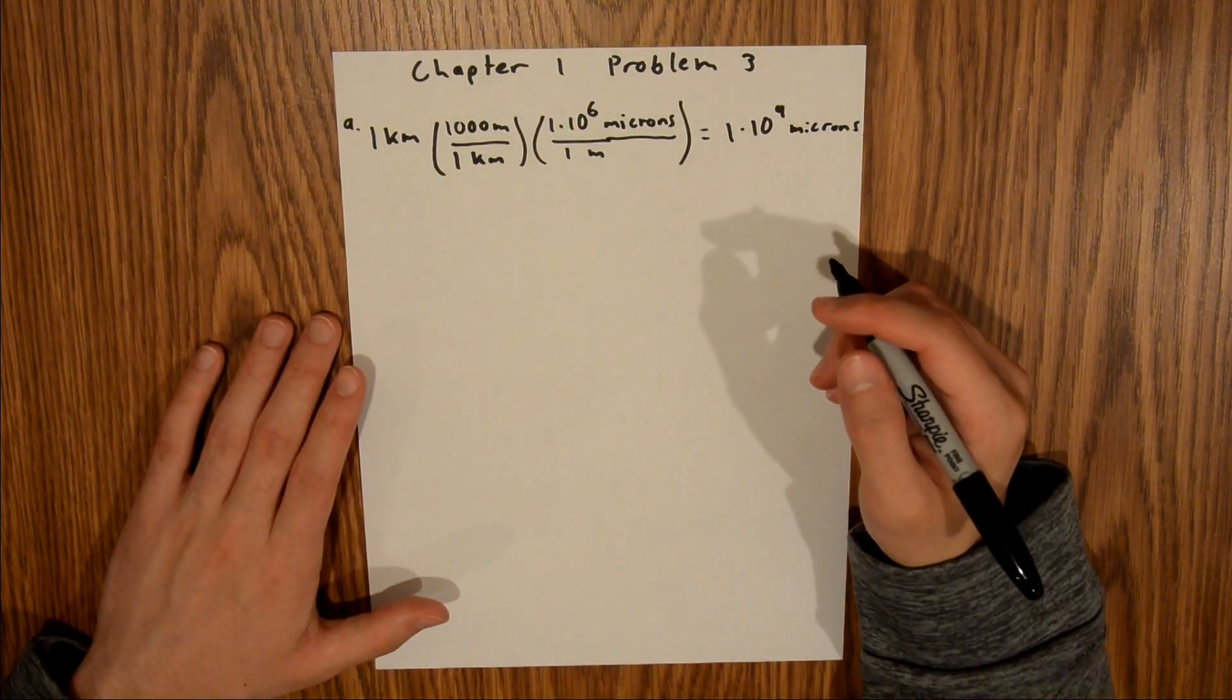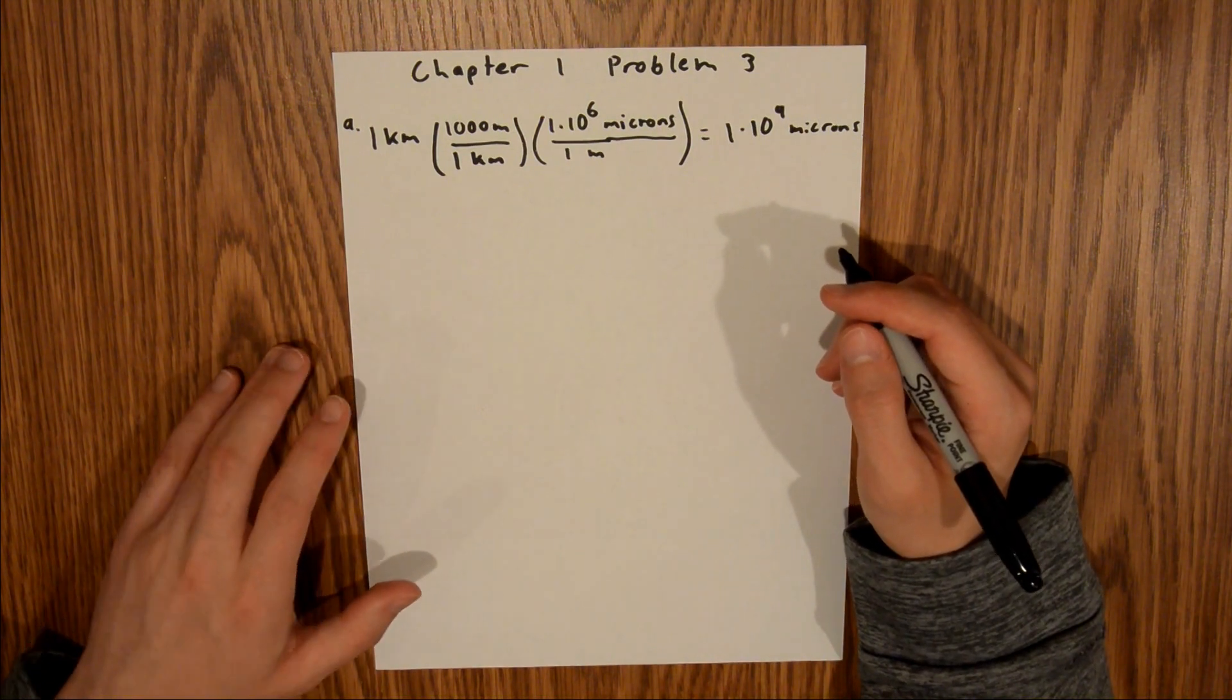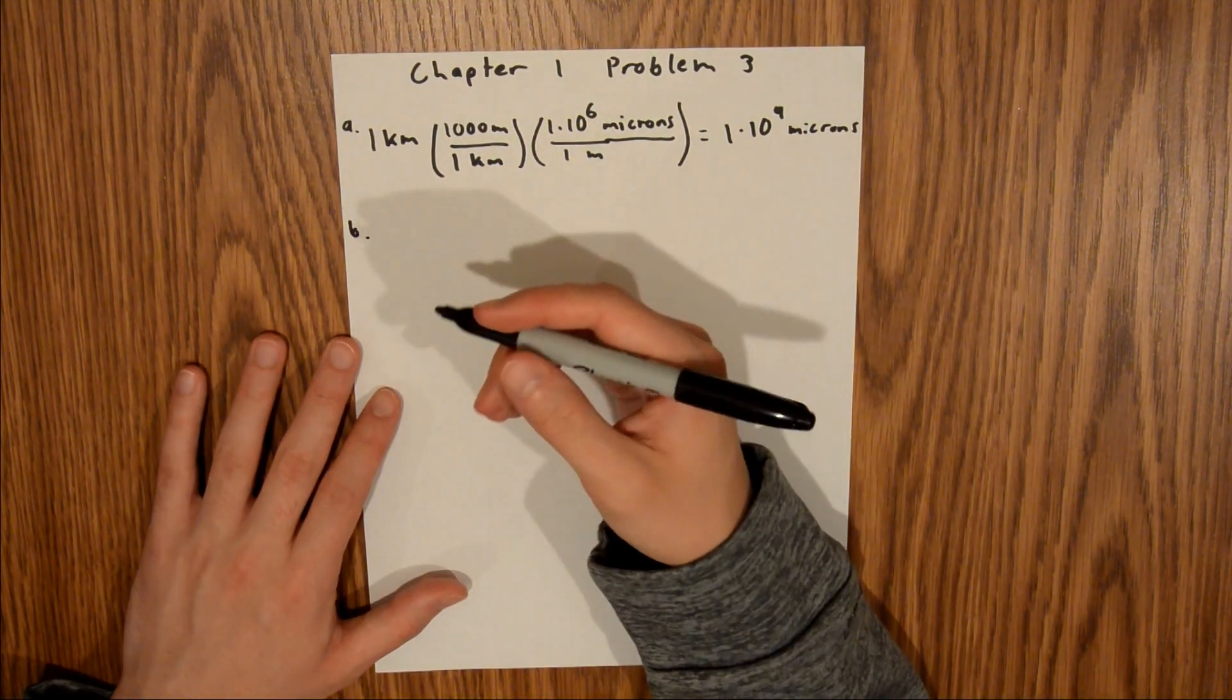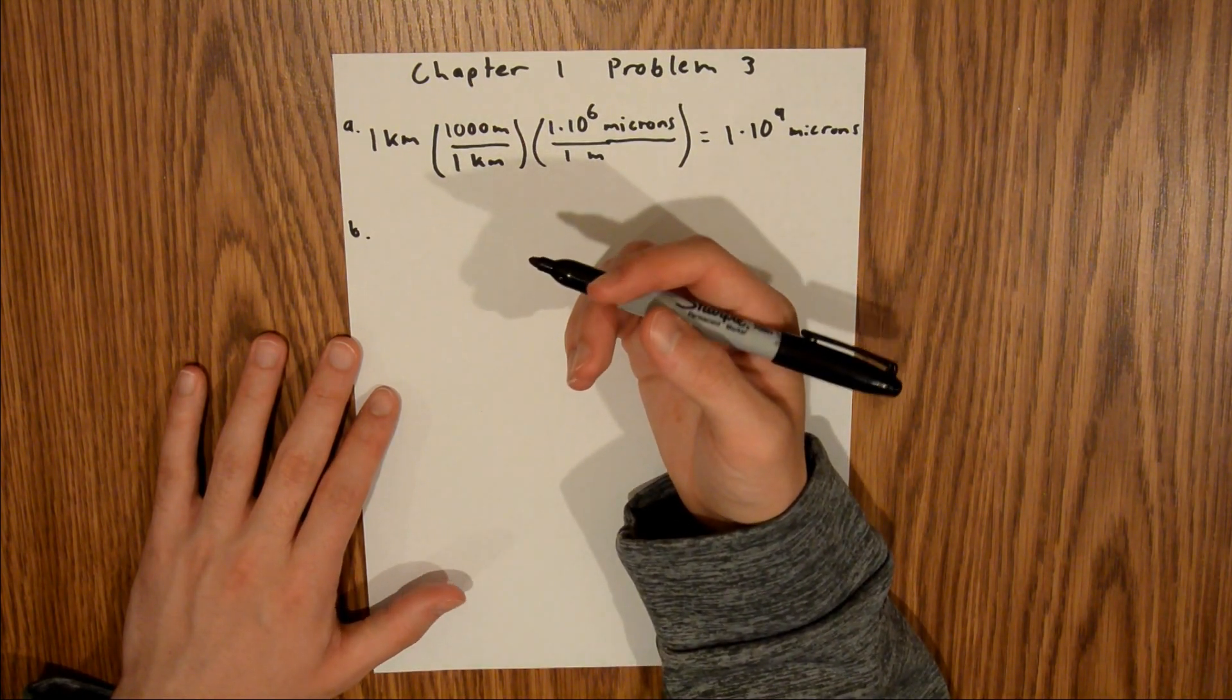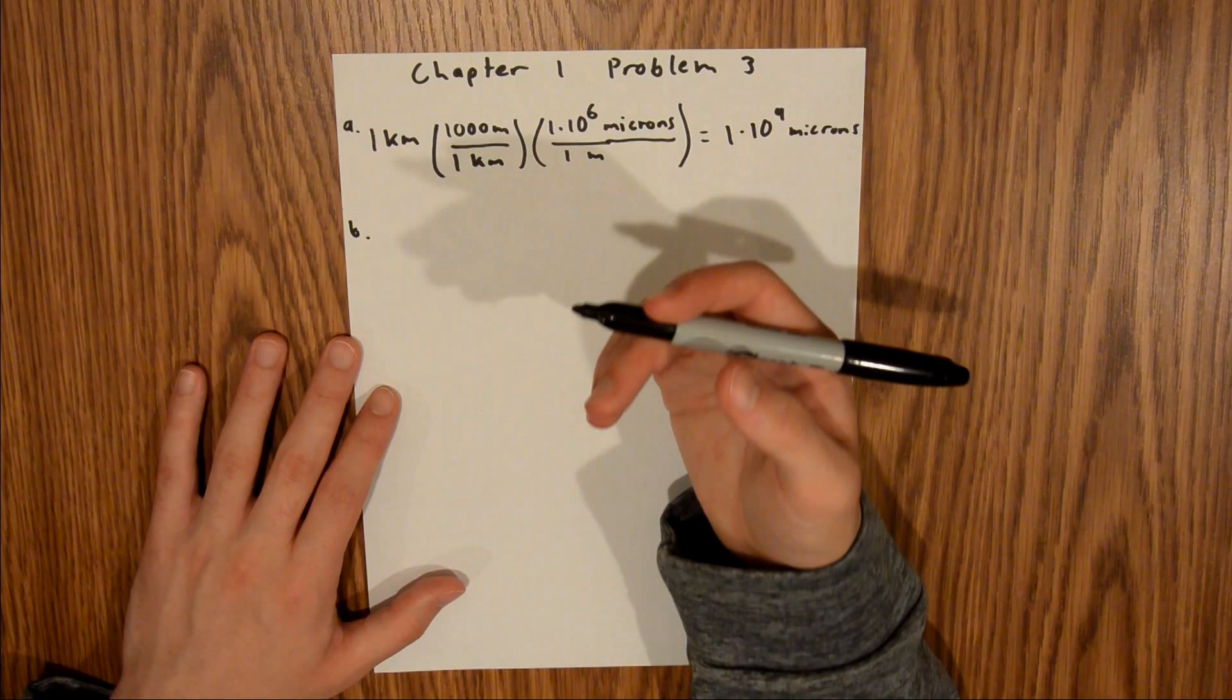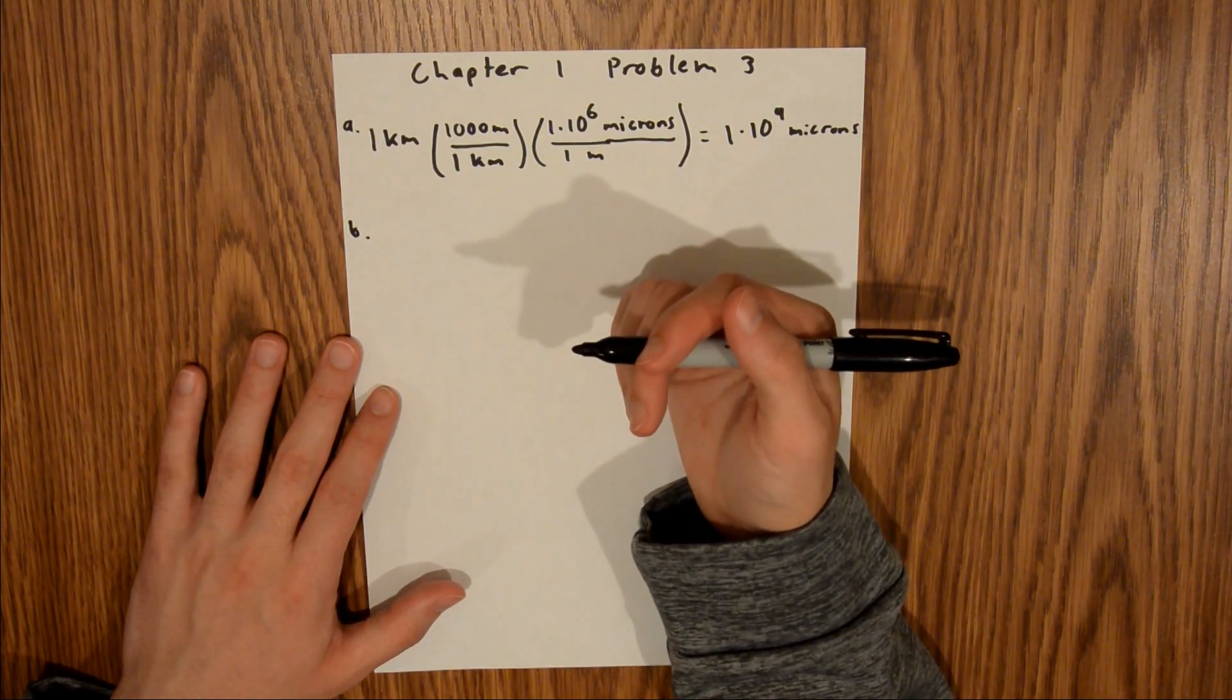And for Part B, we are asked to find what fraction of a centimeter is equal to 1 micron. What we can do is find how many microns make up 1 centimeter, and then take the ratio of 1 micron to how many microns make up a centimeter.